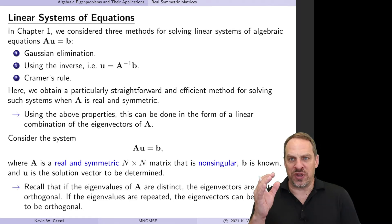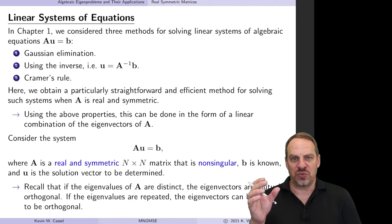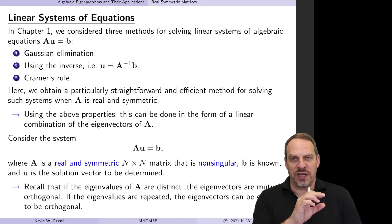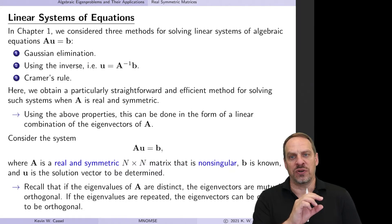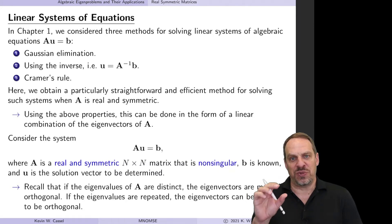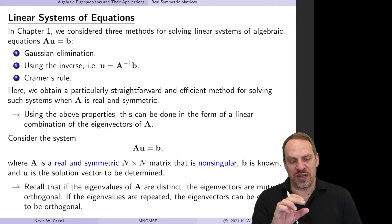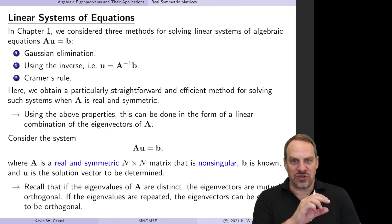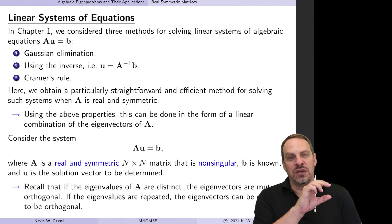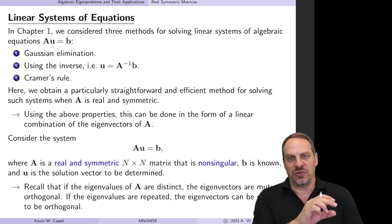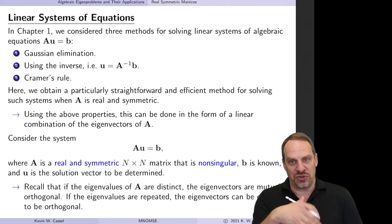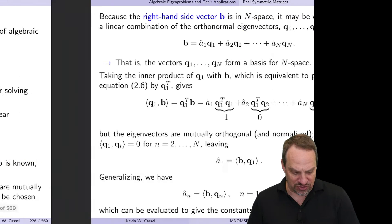Just remember that for a real symmetric matrix with distinct eigenvalues, the eigenvectors are sure to be mutually orthogonal. If we have a symmetric matrix with repeated eigenvalues, we can choose the constants such that the eigenvectors are mutually orthogonal as well — not for every constant, but we can choose them to make that true.